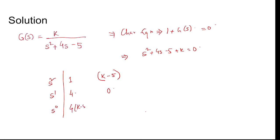Then, 4 times (k - 5) minus 1 times 0, divided by 4, so this is actually equal to k - 5. So k - 5 should be greater than 0 as per the sufficient condition of Routh criterion, which implies k > 5.